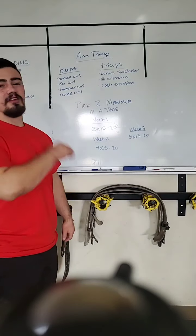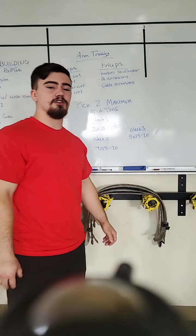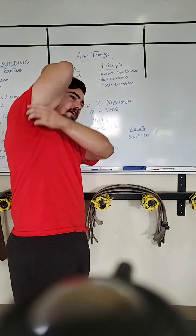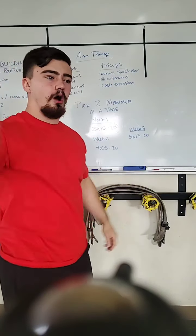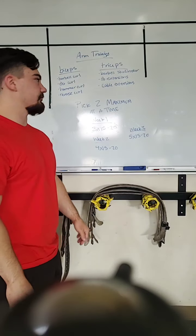Next, we have triceps. Barbell skull crusher is one of the staples that I use. It's going to help train that long head of the tricep in here which is the biggest part of your arm. That will help your arm get the biggest, the quickest.